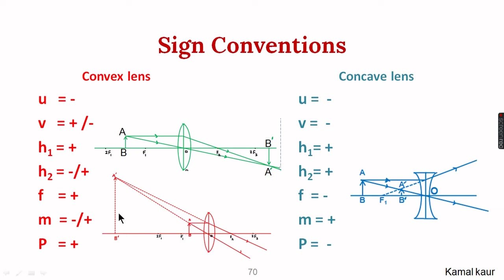For the second condition of a convex lens, where the object is between the optical center and the first principal focus, the object is on the left so u is negative. The image is also on the left side of the lens, so it will also be negative. Height of object is positive above the principal axis. Height of image is also positive because it is above the principal axis. Focal length remains positive. Since it is an erect image, magnification is positive, and power also remains positive.